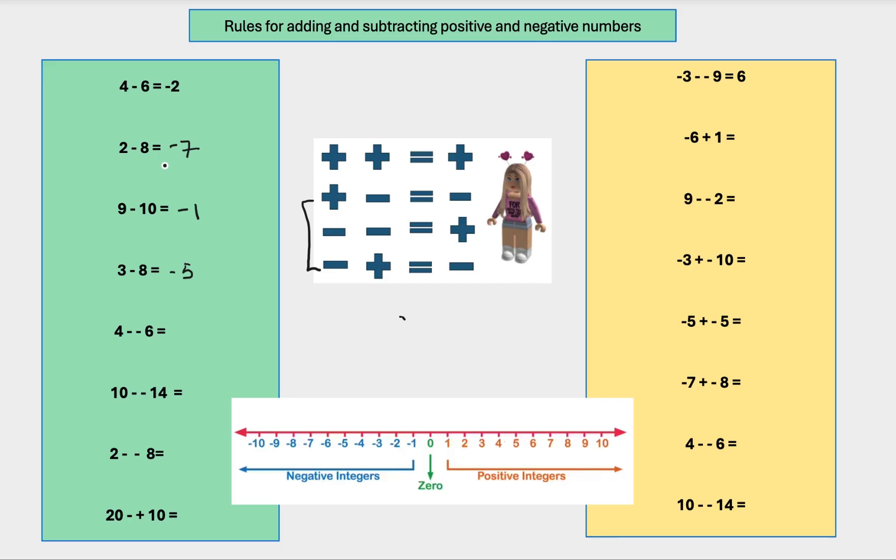Right. I just want to check that one. Does that look right to you? 2 minus 8. Let's do that again. 2. And it wants us to minus 8. So we start at 2. 1, 2, 3, 4, 5, 6, 7, 8. So the answer is actually minus 6. So that was an error on my part. So let's not dwell on that. We all make mistakes. That's how we learn.